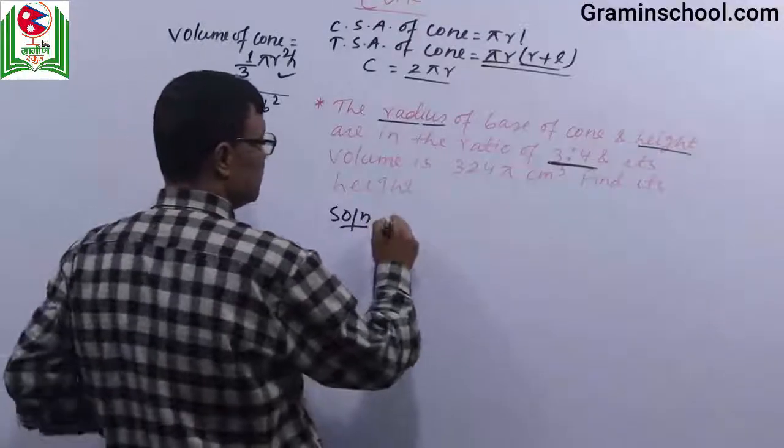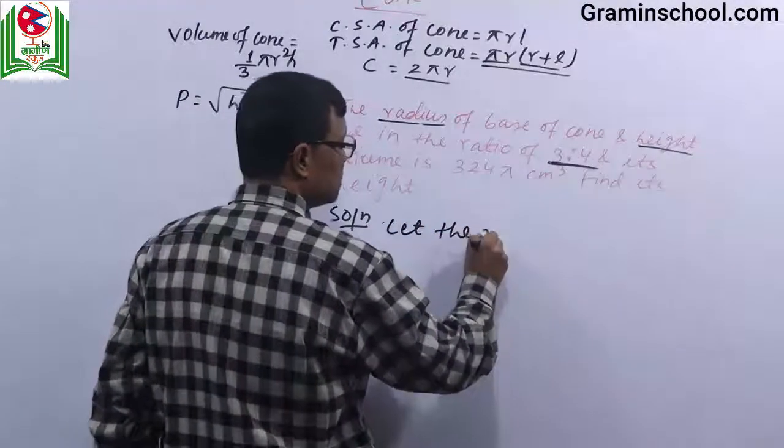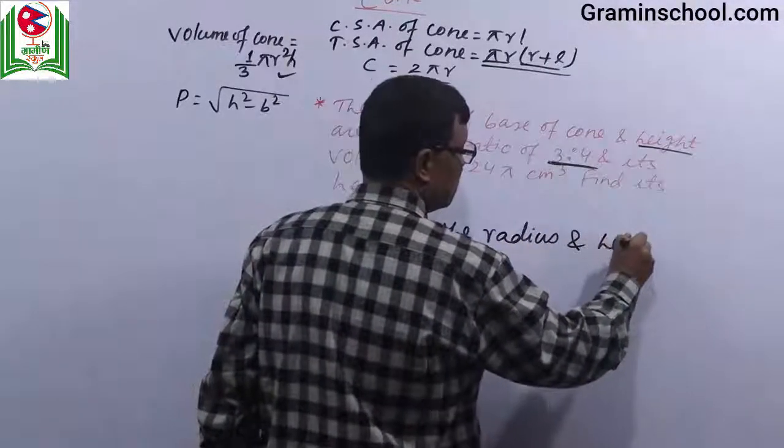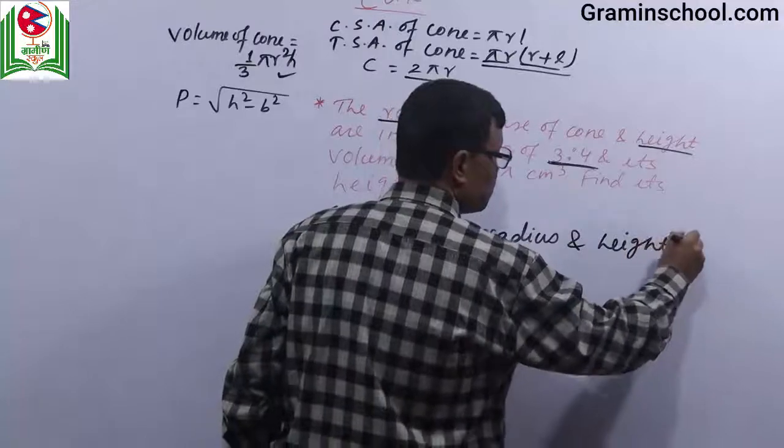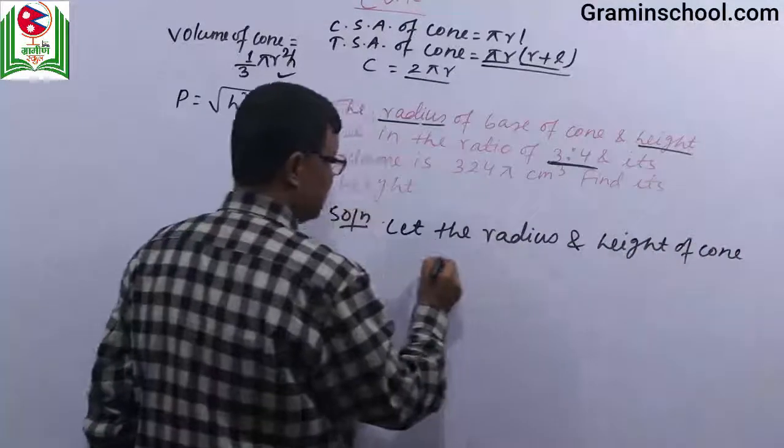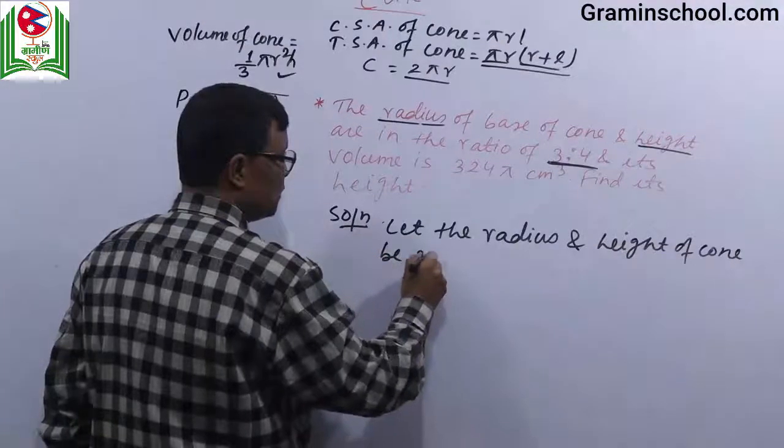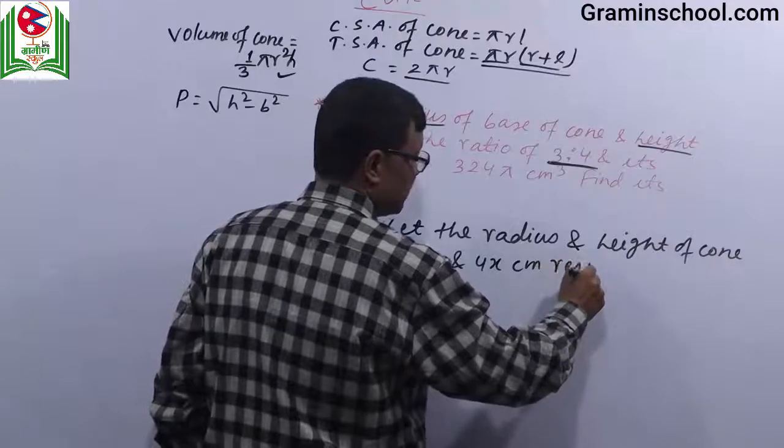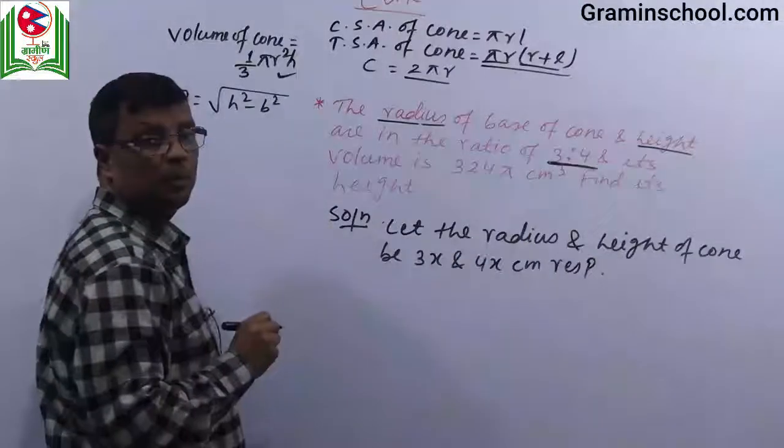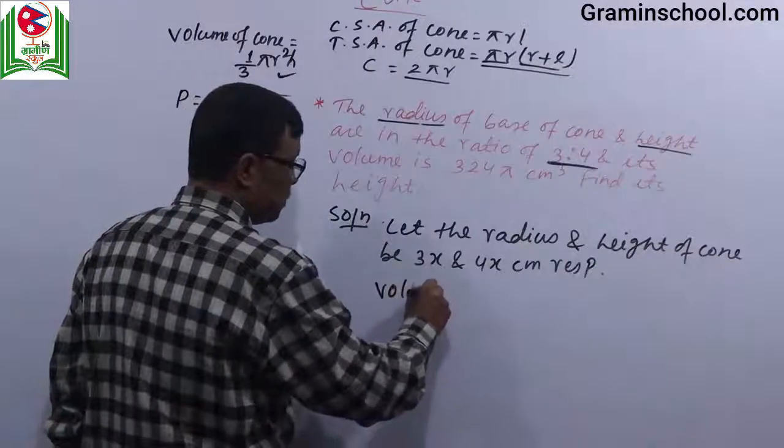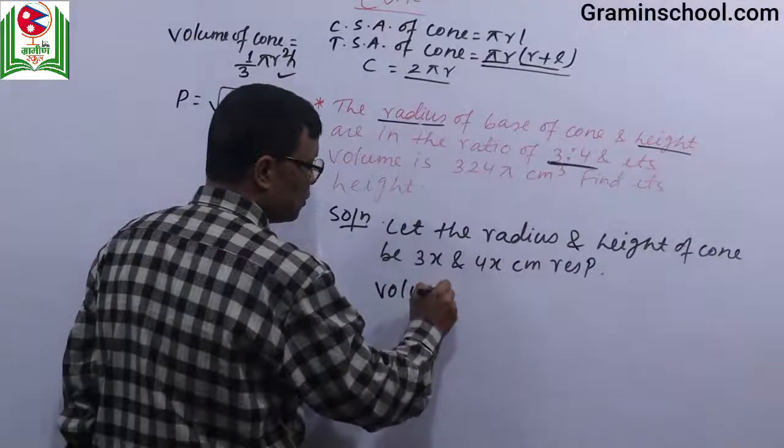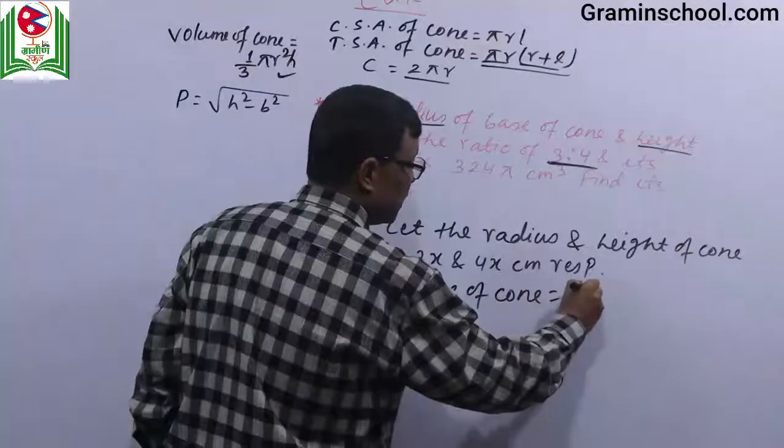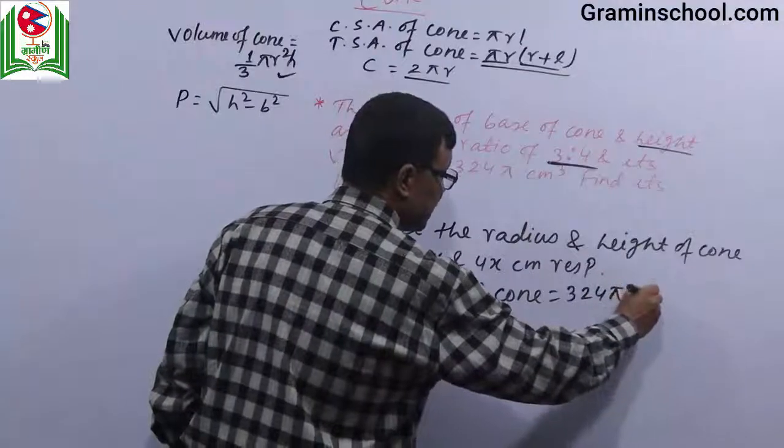Let the radius and height of cone be 3x and 4x, respectively. If r is equal to 3x, what do you mean? The radius is 3x.